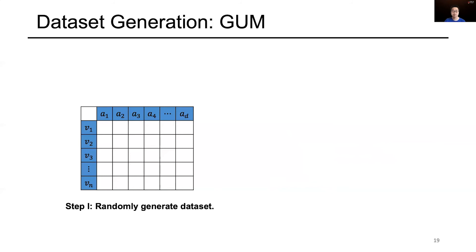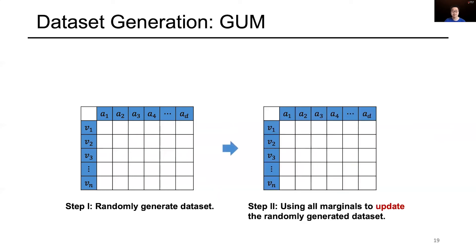With the set of selected marginals, the next step is how to generate a synthetic dataset from them. Our proposal consists of two steps. The first step is to randomly generate a dataset containing n samples and d attributes. The second step is to update the randomly generated dataset to be consistent with all the selected marginals. For instance, if we select a marginal table containing attributes a1 and a2, we first update the records of the dataset to make its distribution consistent with the marginal table.